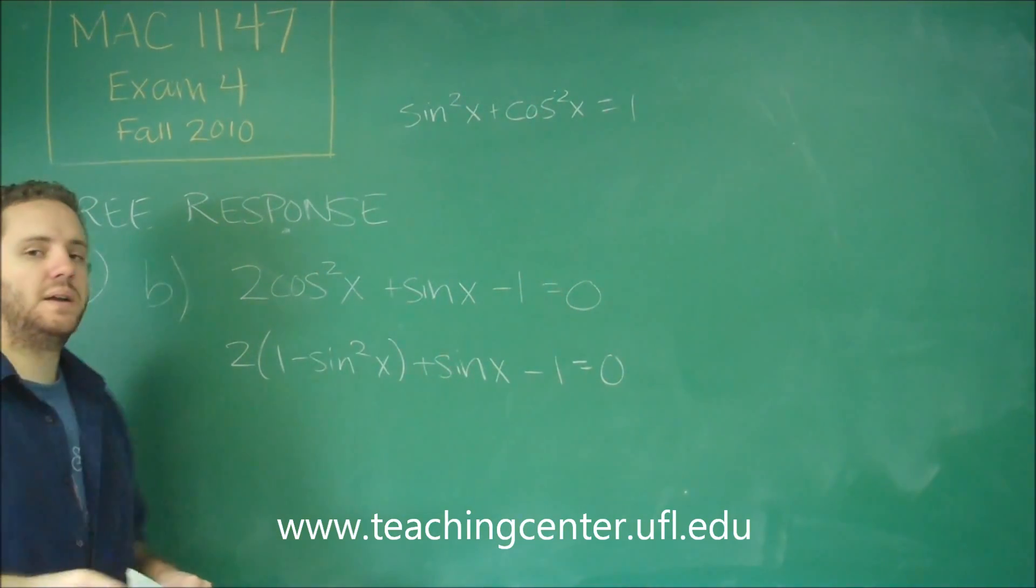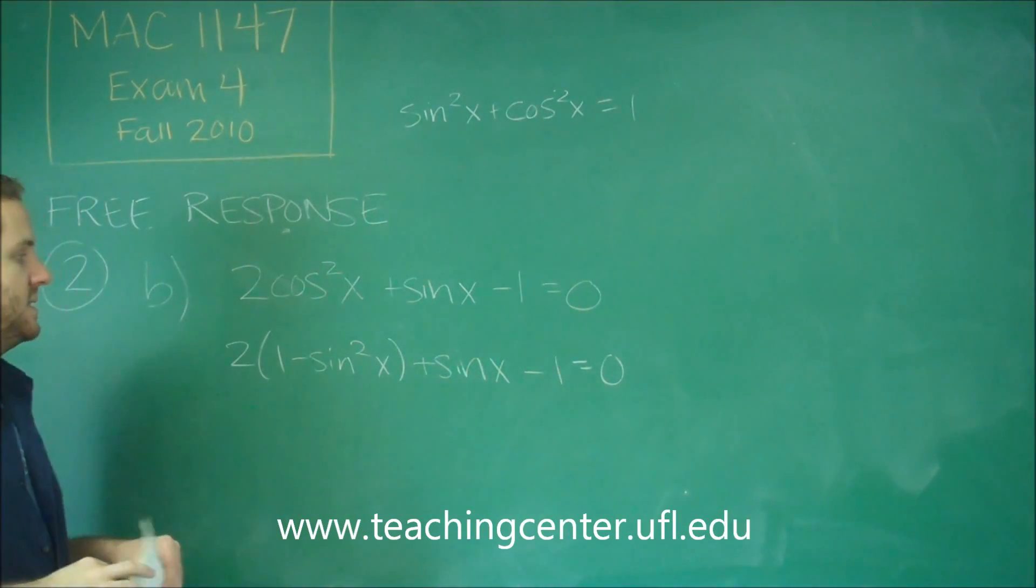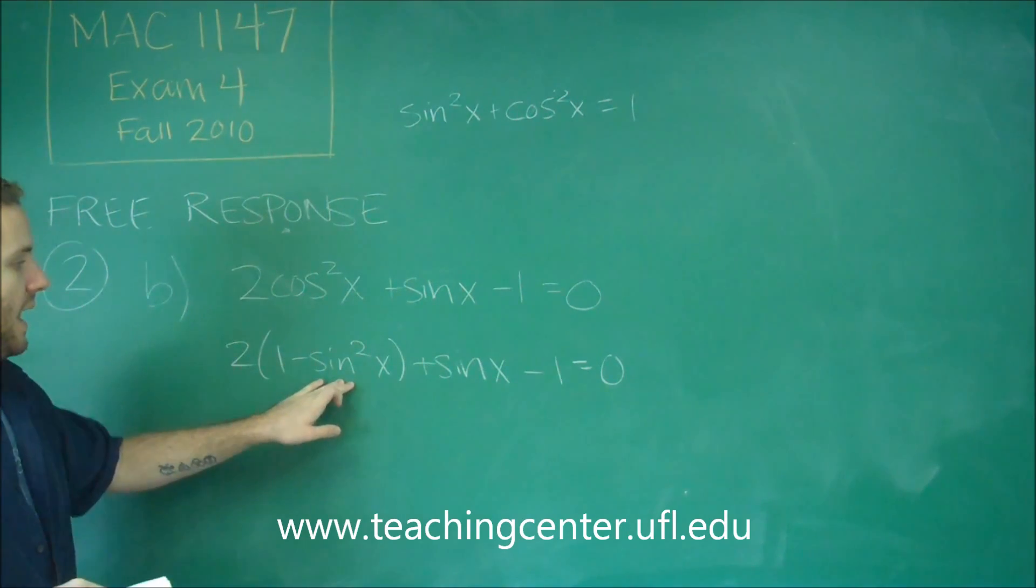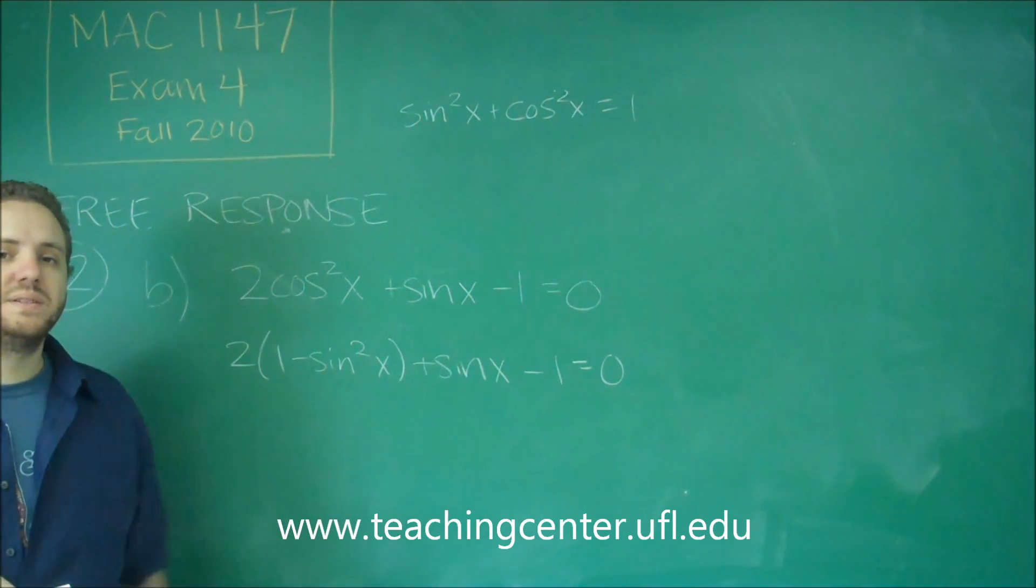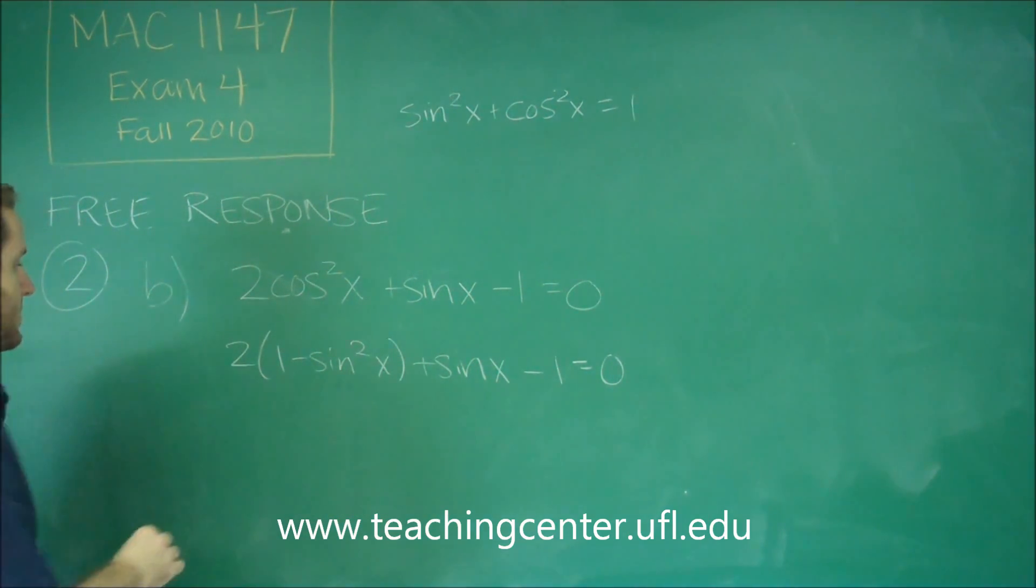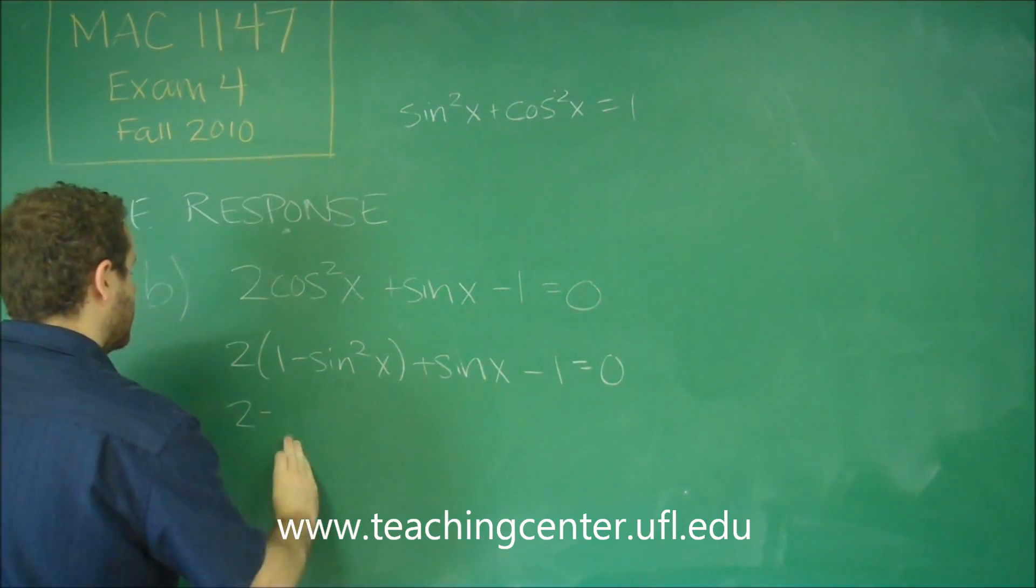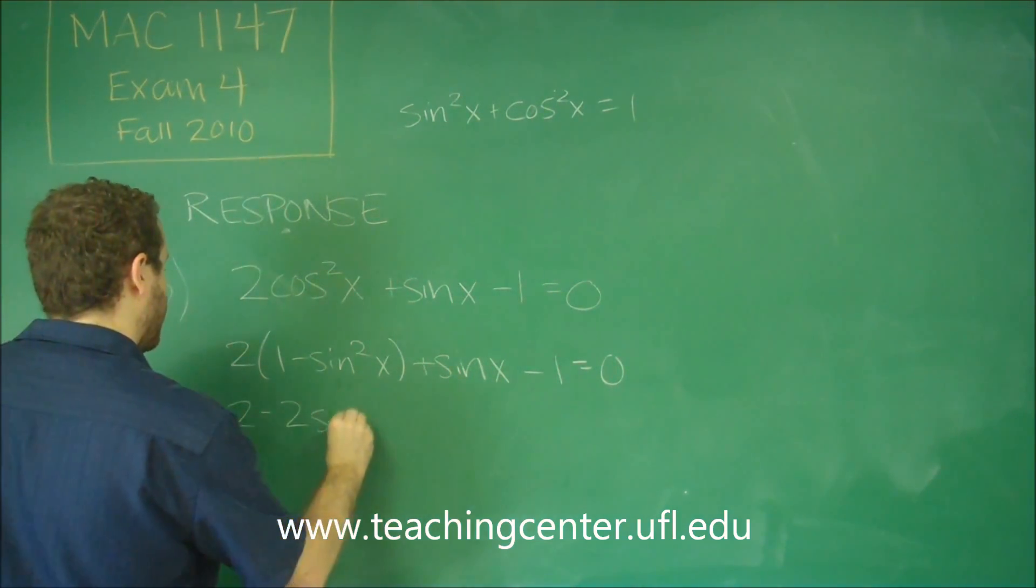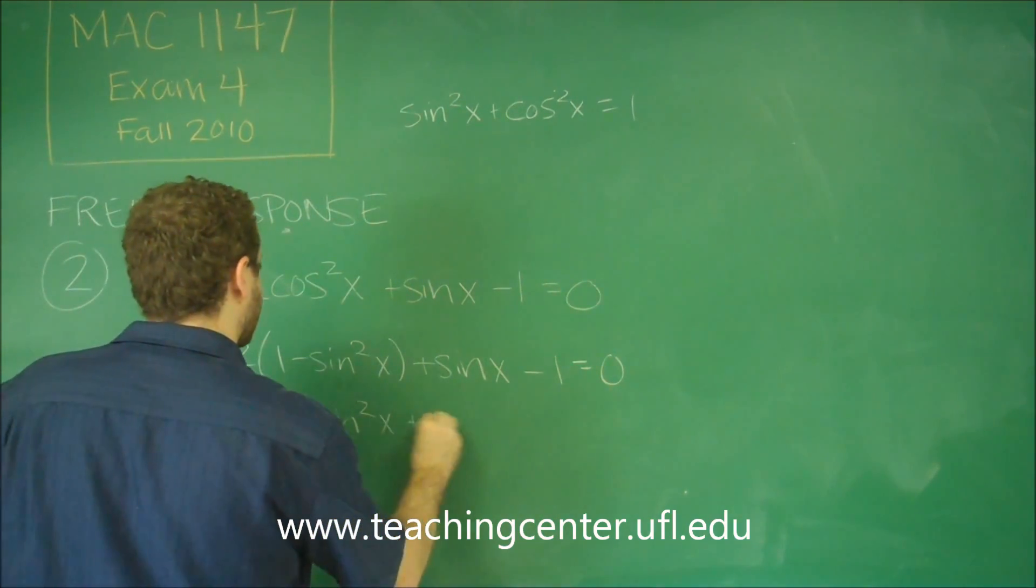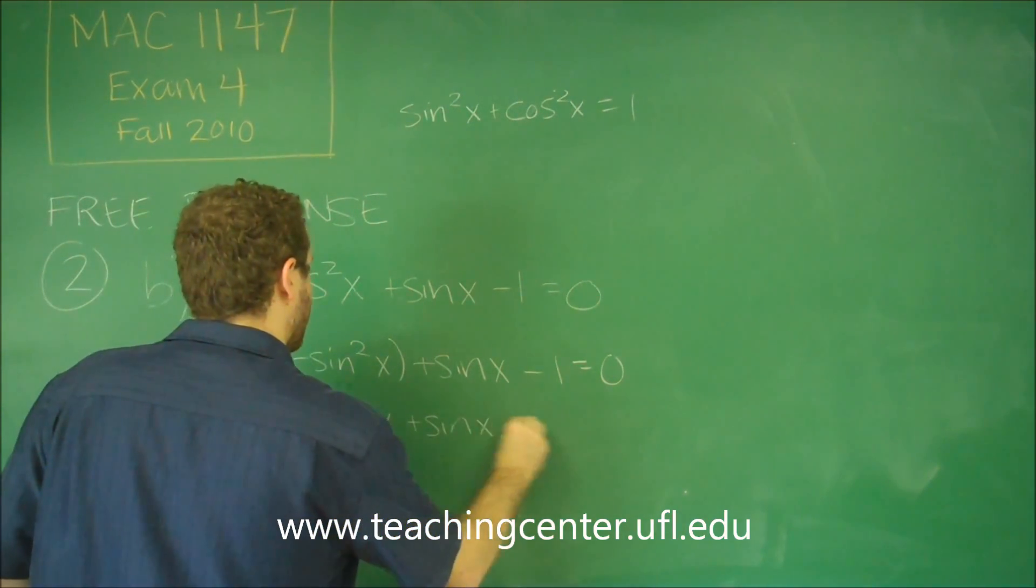Once you get to this point, now what you should recognize is I have a sine squared, and I have a sine. This is going to turn into a quadratic, so first let's distribute 2 minus 2 sine squared x plus sine x minus 1.